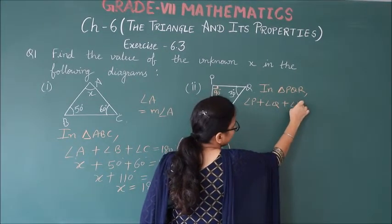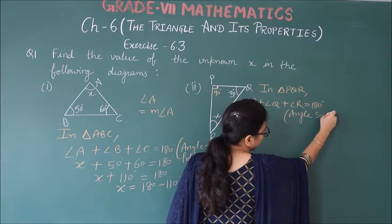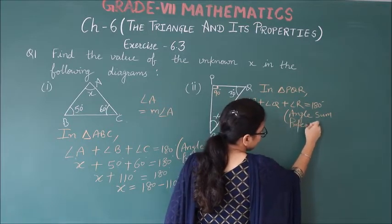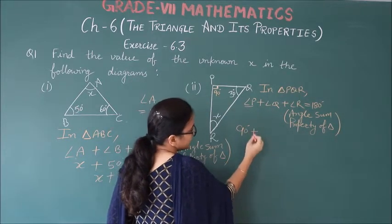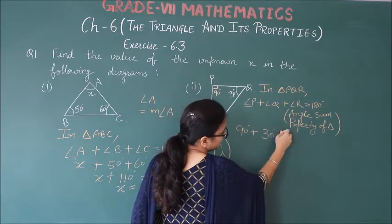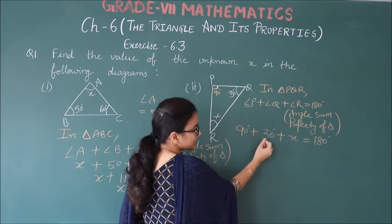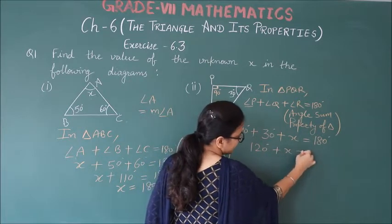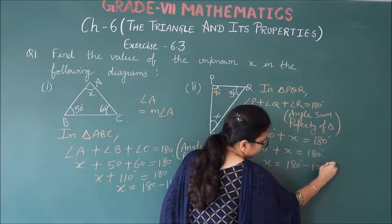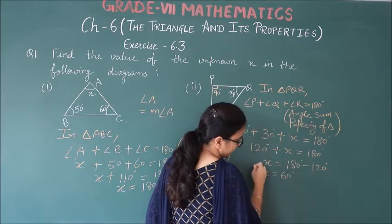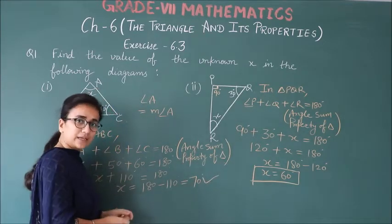In triangle PQR, angle P plus angle Q plus angle R is equal to 180 degrees using angle sum property of triangle. Angle P is 90 degrees plus angle Q is 30 degrees plus angle R is x equals 180. So x is 180 degrees minus 120, then x is equal to 60 degrees.